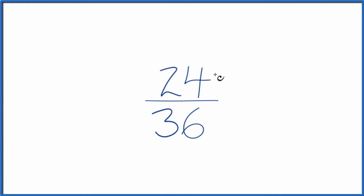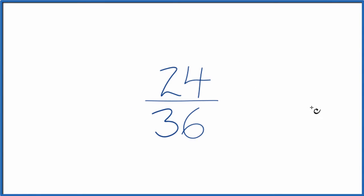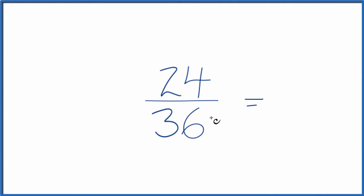Let's find a few equivalent fractions for 24/36. We're trying to find other fractions that are equal — equivalent to 24 divided by 36. You get the same decimal value, just the numerator and denominator are different. Why don't we just simplify 24/36 first? Since these are even, let's divide both by 2.